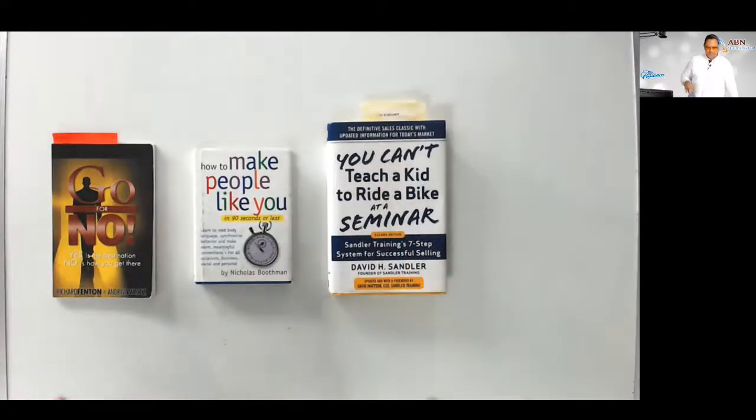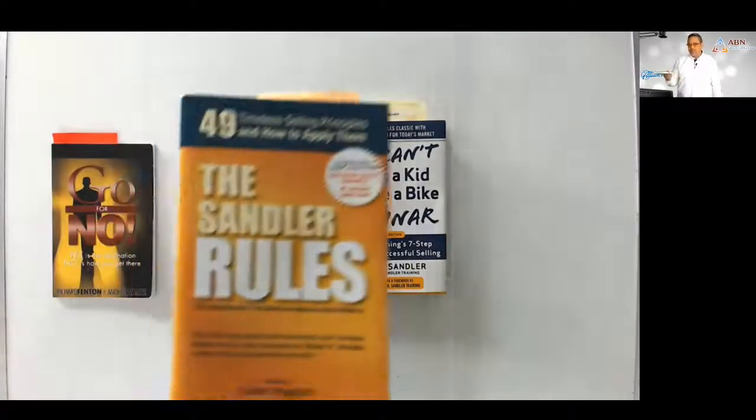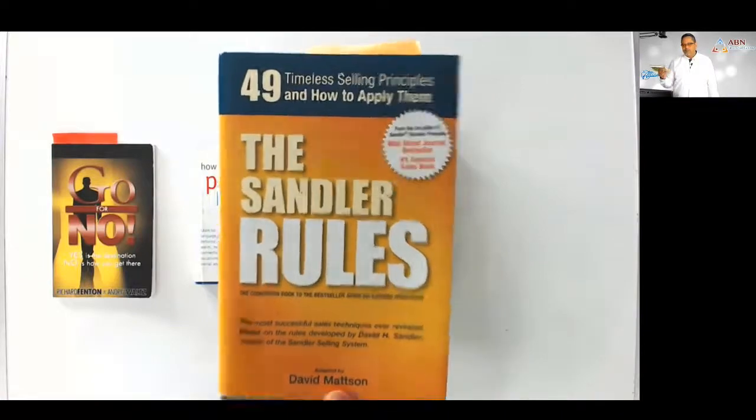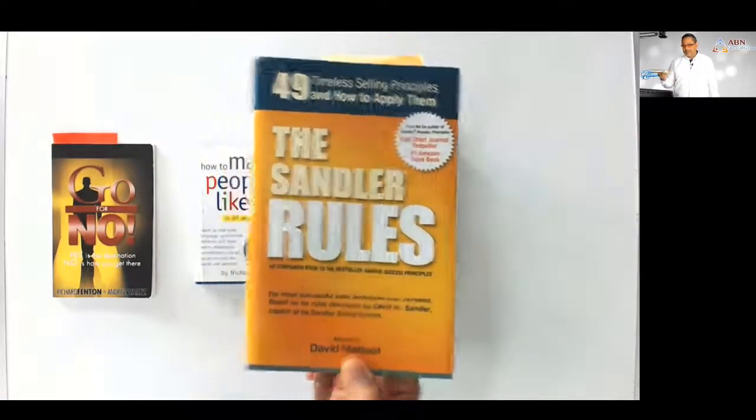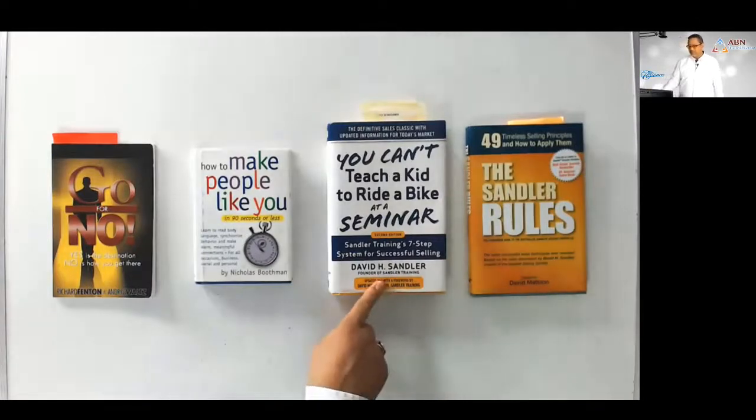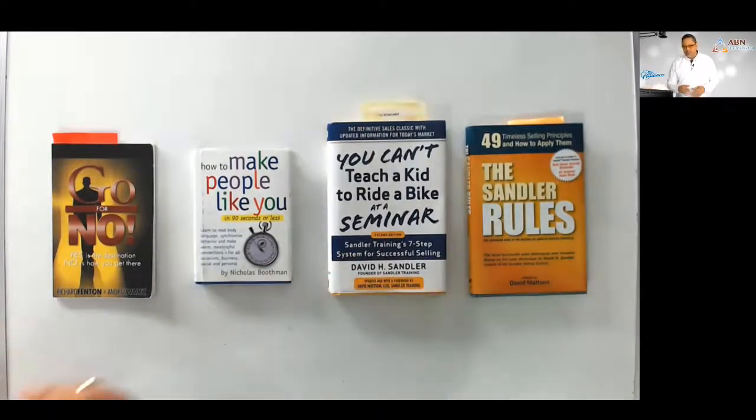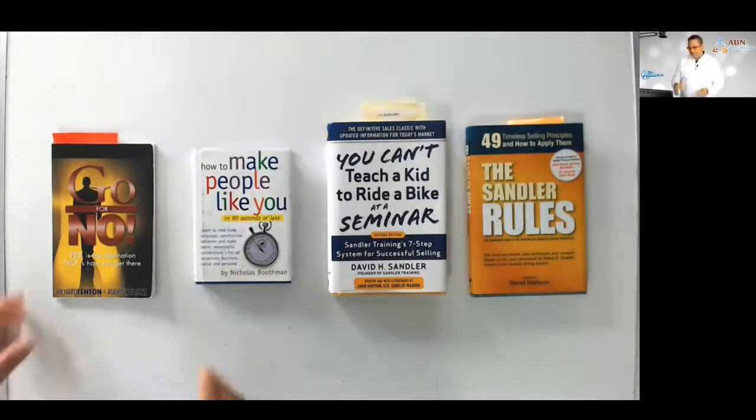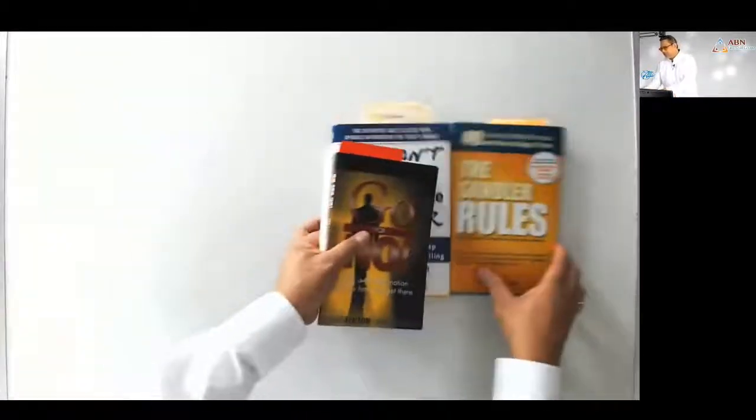The fourth book is sort of the add-on book, a companion book called The Sandler Rules. This book rocks. It's got so many nuggets in it. This is the next book to get after you get this one. This group of books will really get you well on your way to making money with us in our sales system.